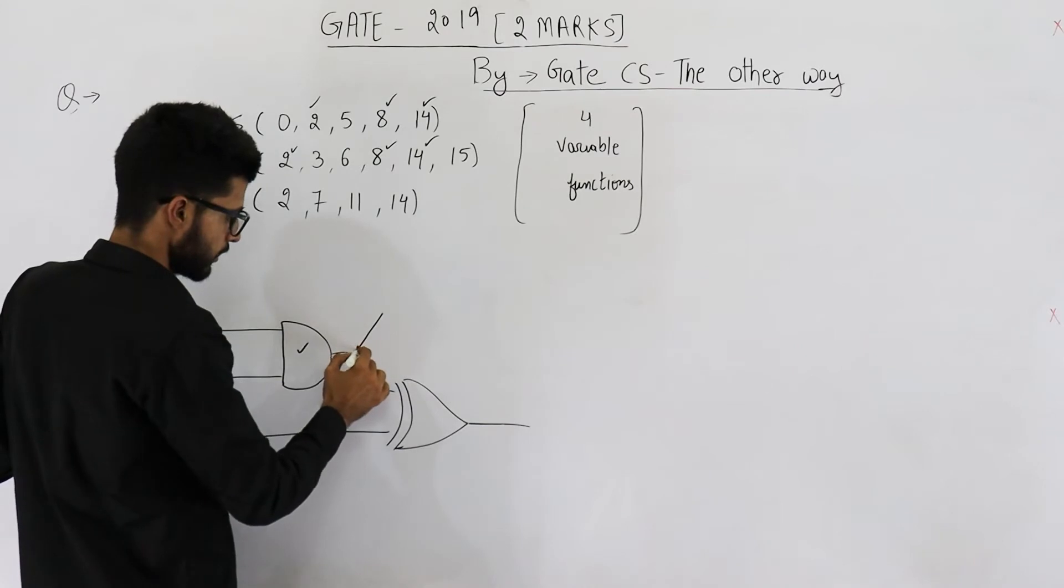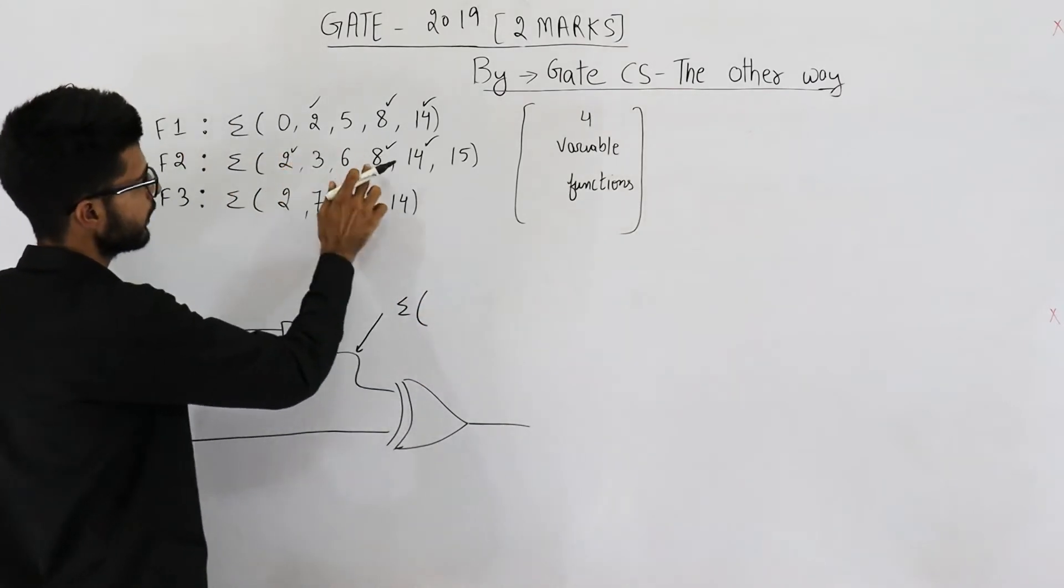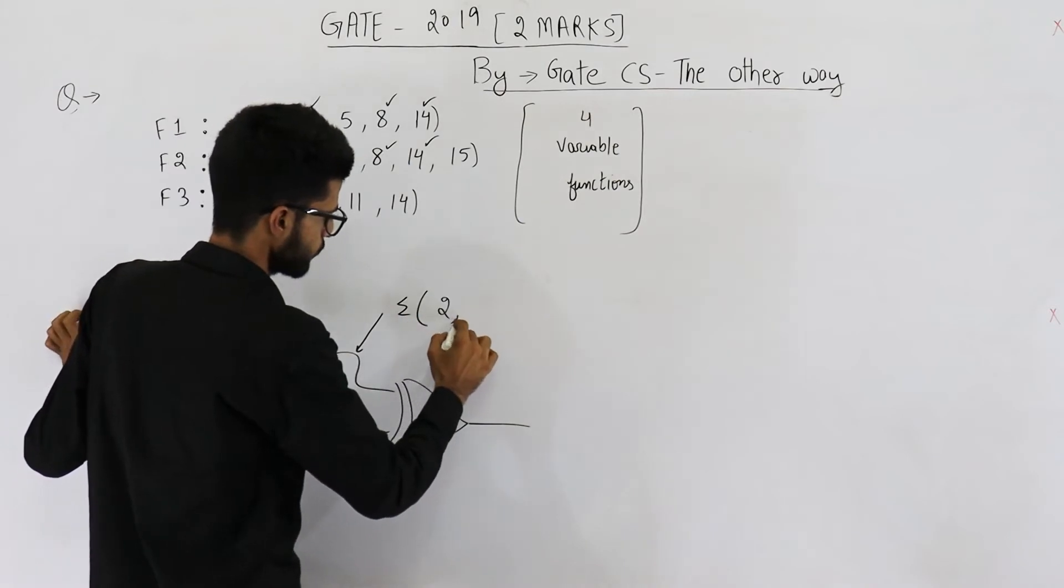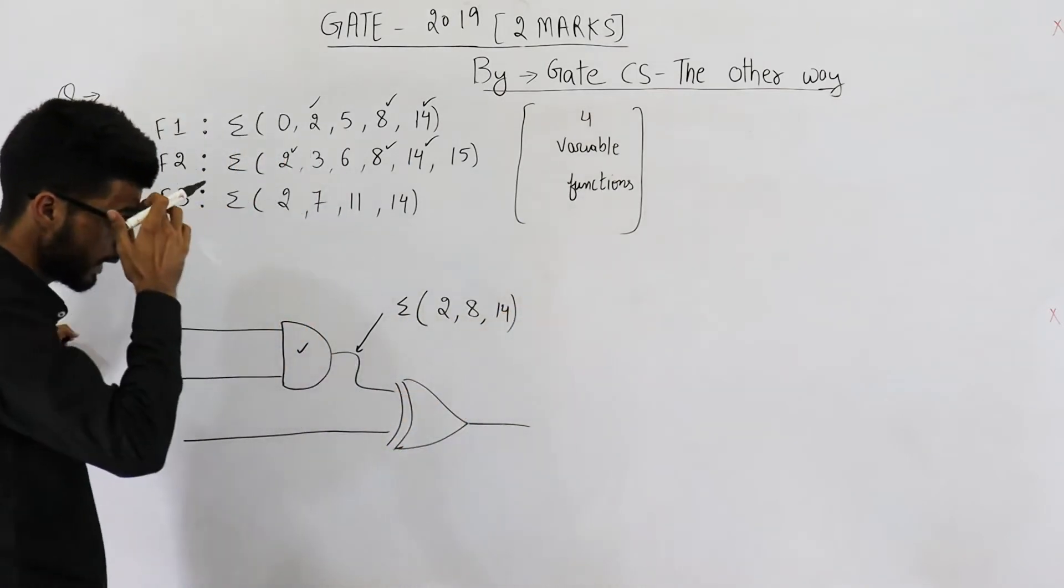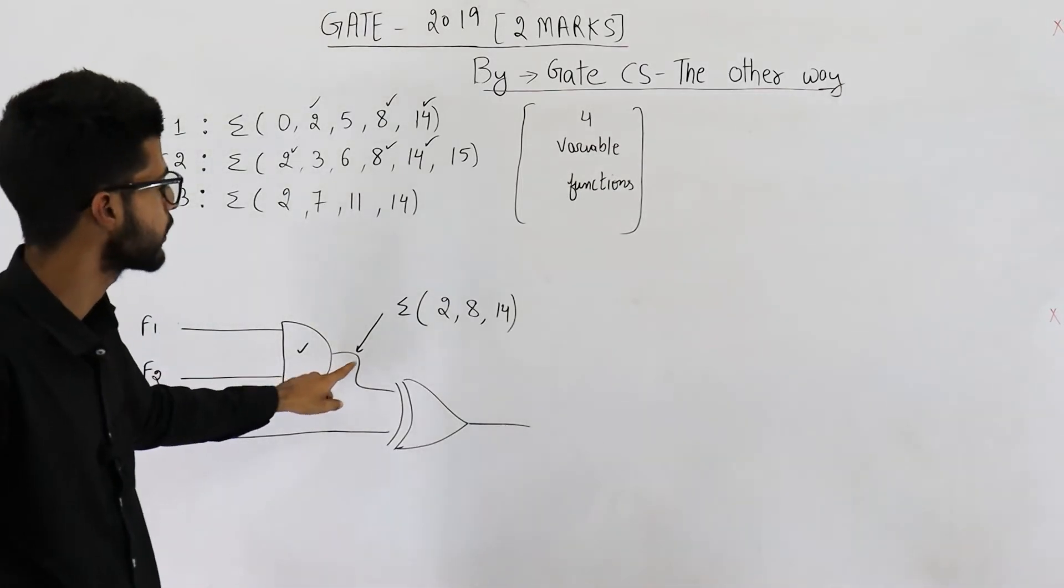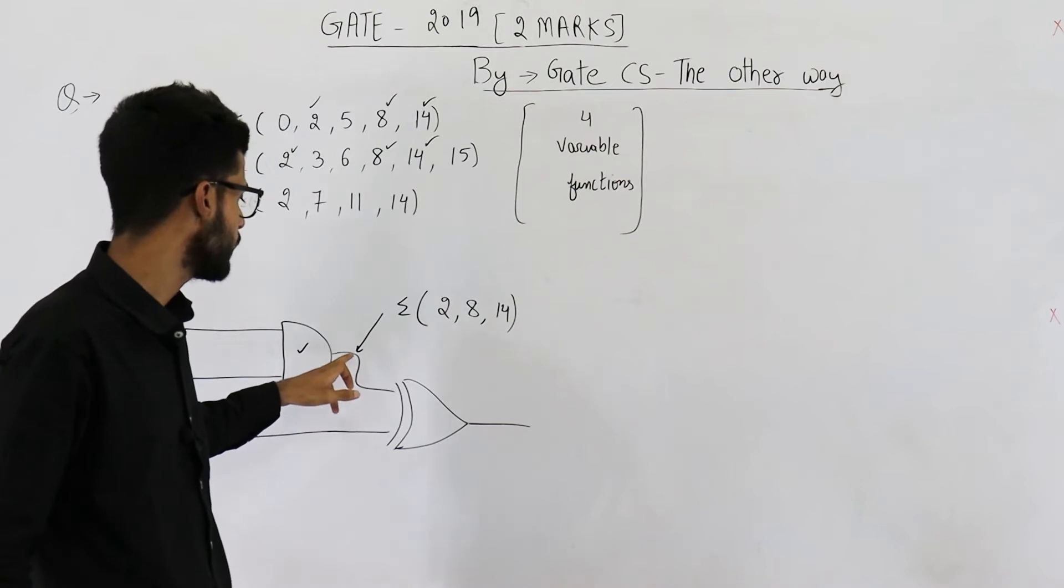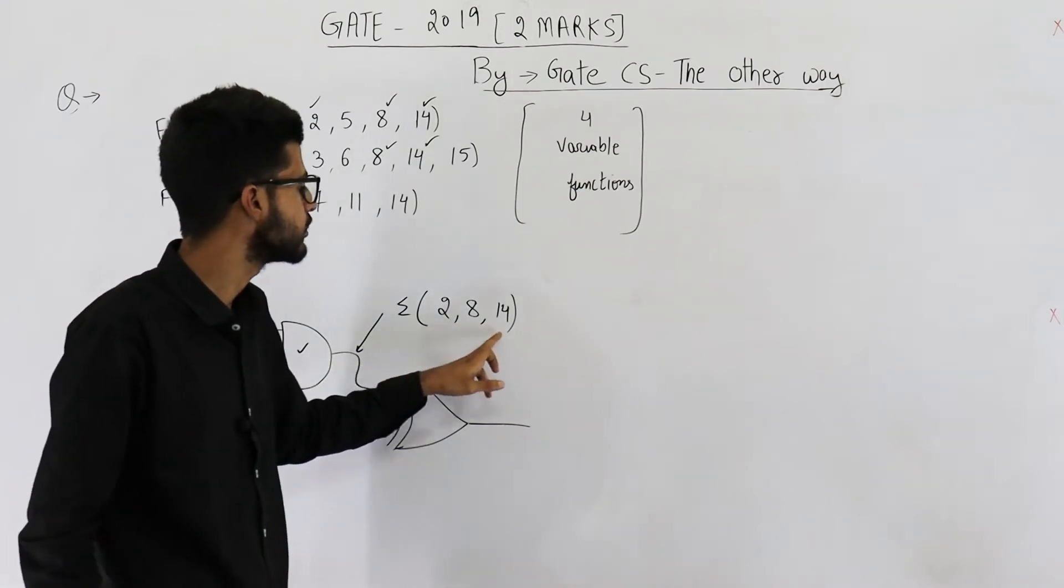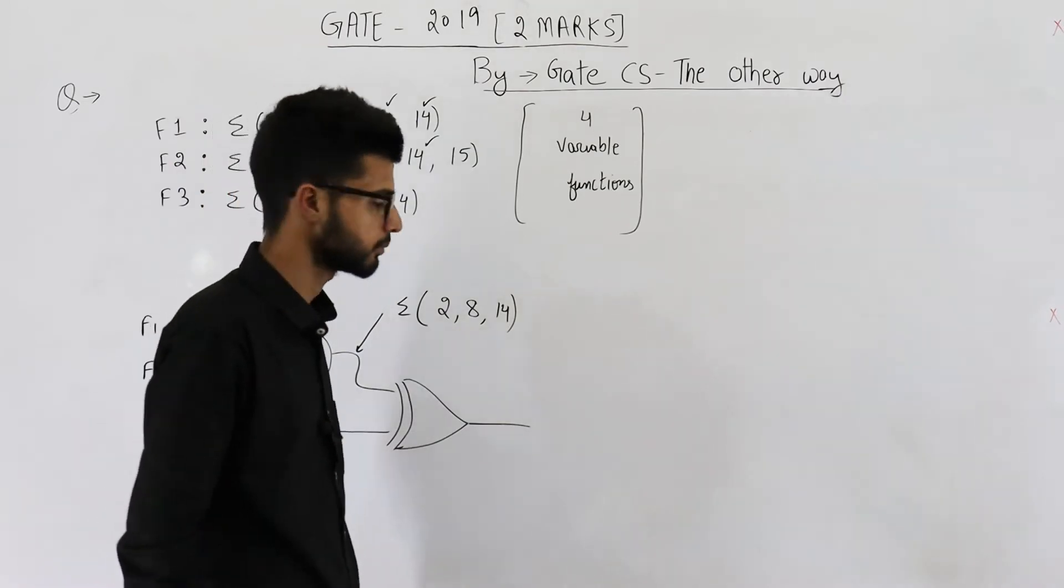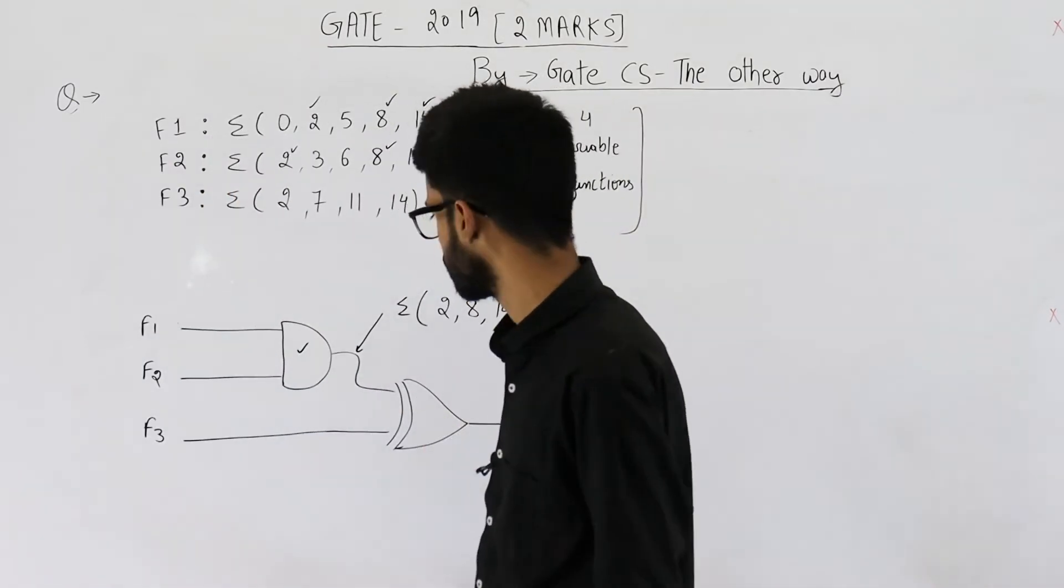That means AND will output 1 in these three cases: 2, 8 and 14. So the SOP form of this output is summation 2, 8 and 14. That means we have 1 or high at this point only on these three inputs. Now let's solve this XOR gate.